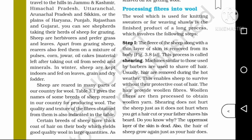First step: The fleece of the sheep along with a thin layer of skin is removed from its body. The fleece is the hair — the thin layer of skin is removed. This process is called shearing.